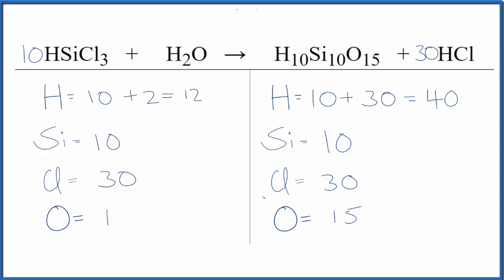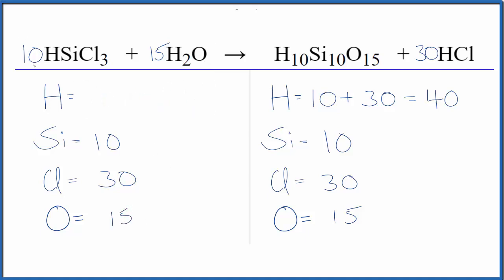Let's do the oxygen now — we have fifteen on the product side and one on the reactant side. If we put a fifteen in front of H2O, we can update the hydrogens and the oxygens. One times fifteen balances the oxygen atoms. For hydrogen: ten times one is ten, plus fifteen times two is thirty, and ten plus thirty is forty. We're done — this equation is balanced.